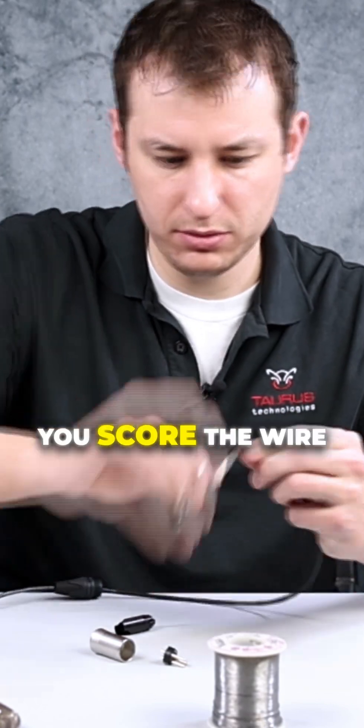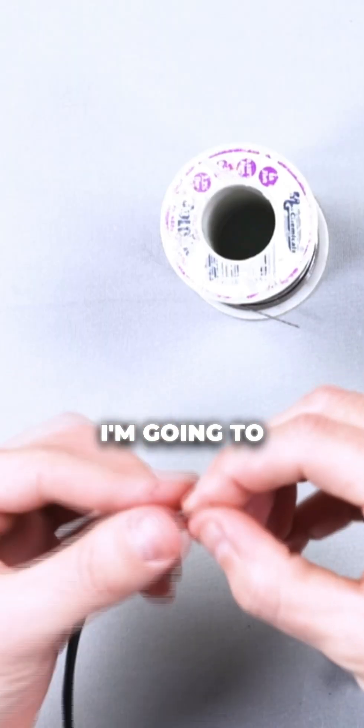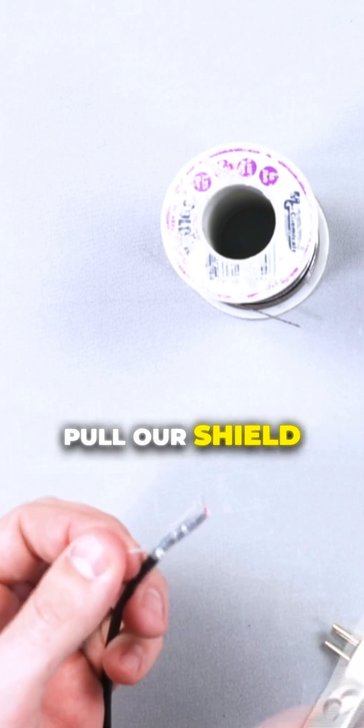Cut back maybe like an inch and a half or so. You score the wire. I'm going to cut out this fabric, pull the shield to the side.